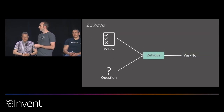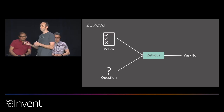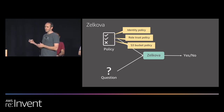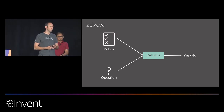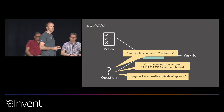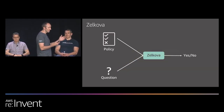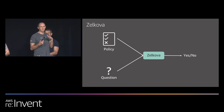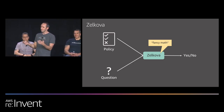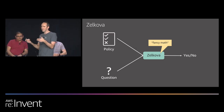So we built a tool called Zelkova. At a high level, Zelkova takes your policy, takes a question you have about the policy, and gives you a yes-or-no answer. The policy can be an identity policy, a role trust policy, an S3 bucket policy. The question is a yes-no question — like: can user Jane launch EC2 instances? Can anyone outside of account 123 assume this role? Is my bucket accessible outside of VPC ABC? You give the policy and question to Zelkova and it does what we call fancy math. All those previous techniques are partial and limited — they only look at some cases — but we wanted to look at every possible case, the infinite possibilities, and for that we need these fancy mathematical techniques.